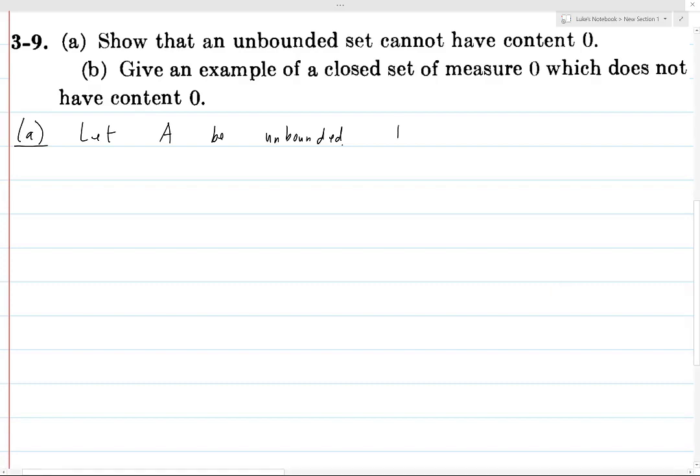For one reason it's important because it gives us this quick argument for part A, but it's also really important when we get to part B and actually look at an unbounded set of measure zero. Okay, so let A be unbounded. If U1 through Um covers A, then given bounded rectangles U1 through Um, the union of all the UIs is also bounded.